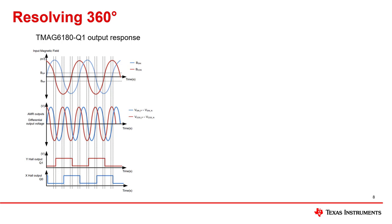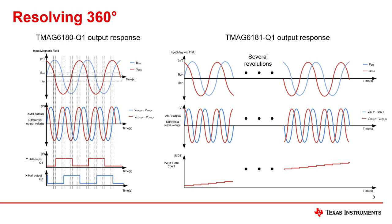A companion device, TMAG-6181Q1, replaces the quadrature output with a pulse width modulation turns counter. Once enabled, the turns counter increments or decrements at each 90 degree rotation interval. This allows the system to track relative angle position across the full 360 degree rotation based on the position of the magnetic field when the turns counter was enabled. The turns counter is particularly helpful in geared systems where the motor may turn many times before the target achieves full revolution.